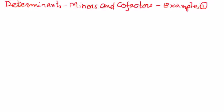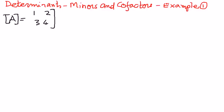Welcome to my presentation. In this presentation, let us try to find the minors and cofactors of a matrix. Let this matrix be A, and in this example, let's say the elements of this matrix are 1, 2, 3, and 4. We're just taking a simple example to illustrate the minors and cofactors of this. So let us find the minors.